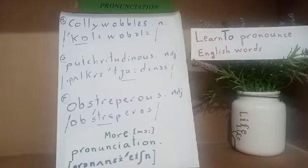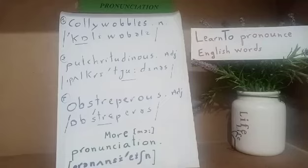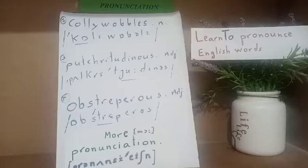The second word is pulchritudinous — a five-syllable adjective. It has two stresses: the secondary stress is on the first syllable 'pul,' but the primary and main stress is on syllable three. We say pulchritudinous. As an adjective, it means beautiful.